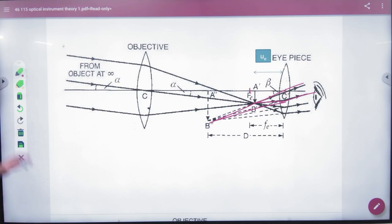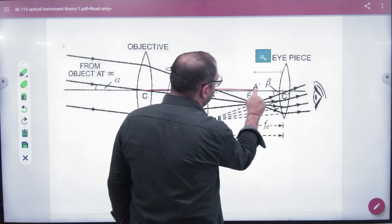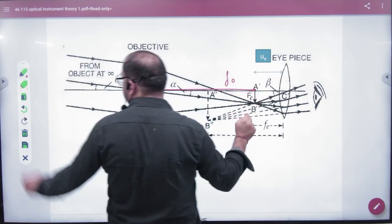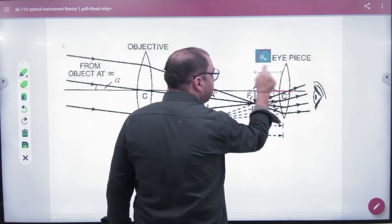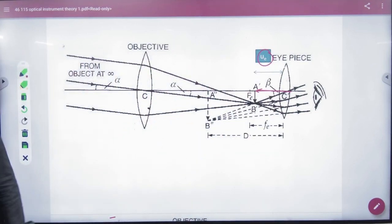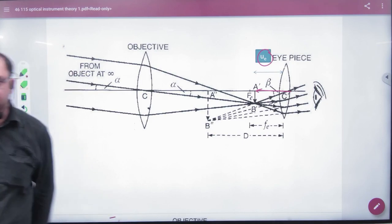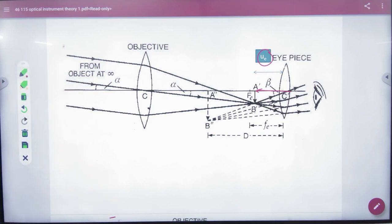So there is a difference from infinity. In this distance, there is no difference in this distance. This is Fo. But this distance, this is Fe. Now this is Fe. How much? Ue. That is distance of eyepiece. Clear here? Distance of eyepiece.